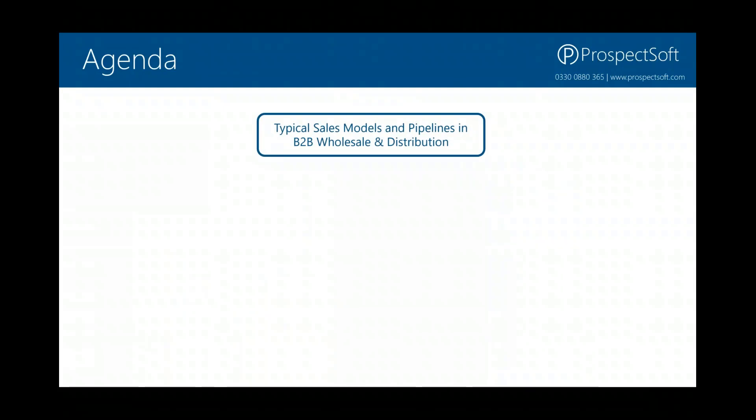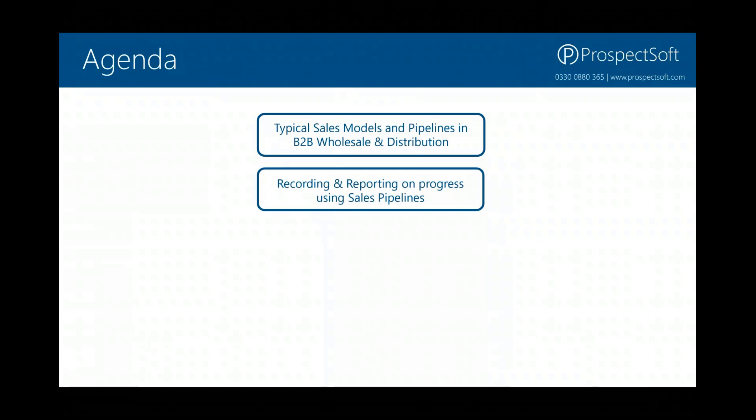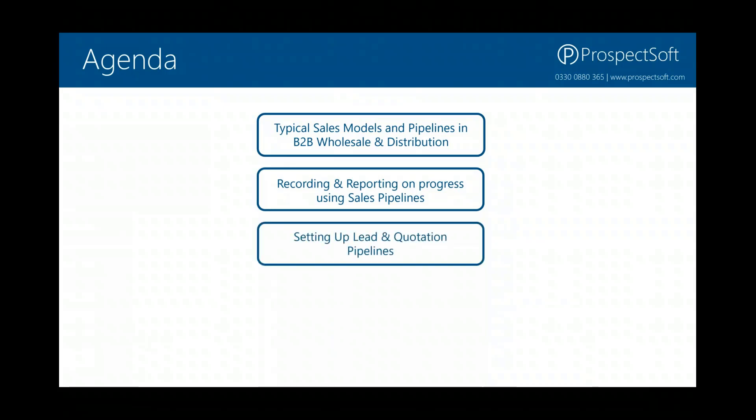The topics we're going to cover today are: we're going to look at the typical sales models and pipelines that you find in a B2B wholesale and distribution business, and we're going to look at the software and see how you can record your progress through those different types of pipeline and how that can be used for reporting.